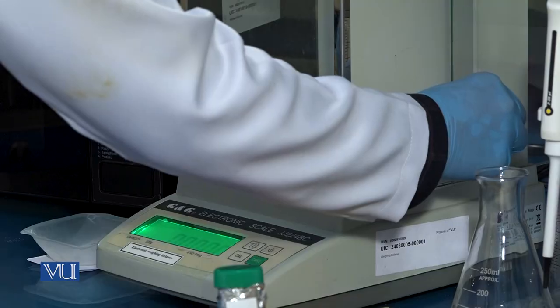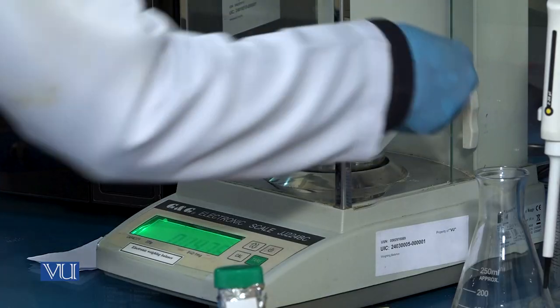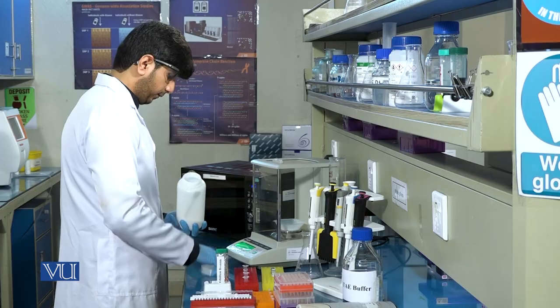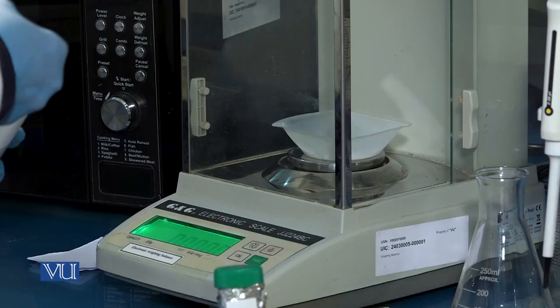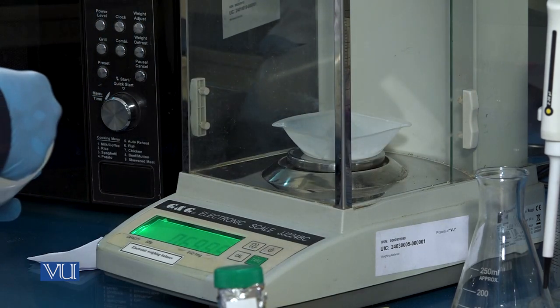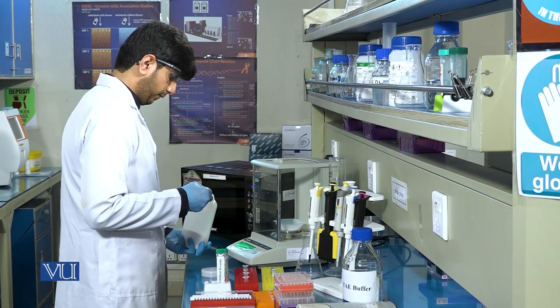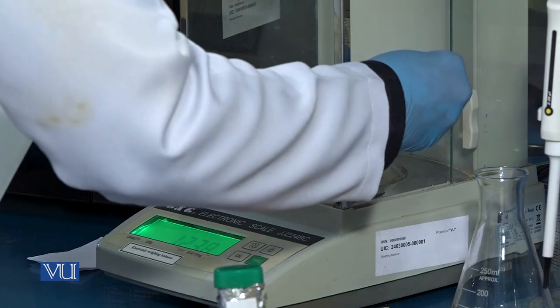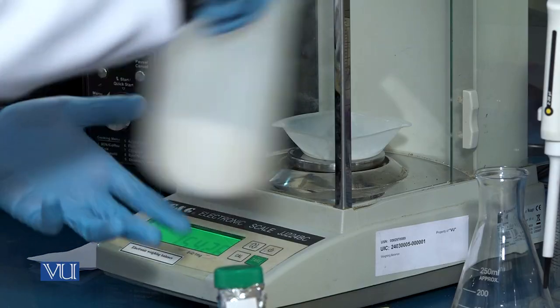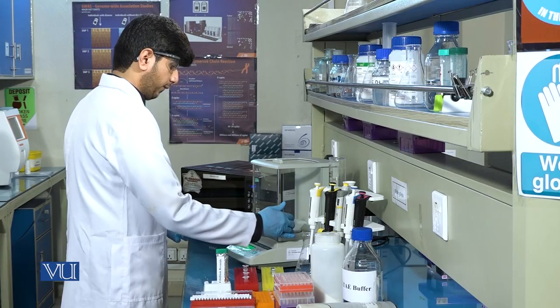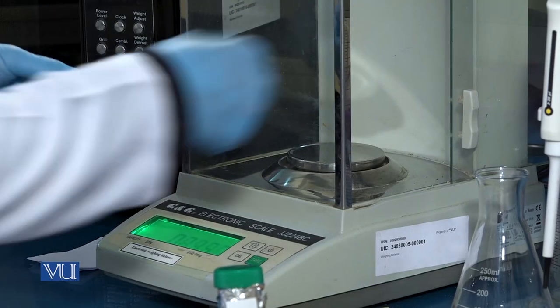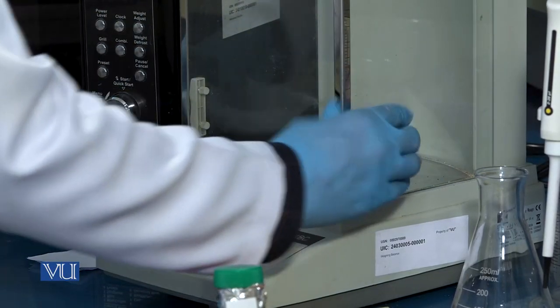First of all, we will weigh the agarose powder with the help of weighing balance. We will weigh 0.8% to 1% agarose gel. For this purpose, we will weigh 1 gram of agarose and we will add into 100 ml of TAE buffer.